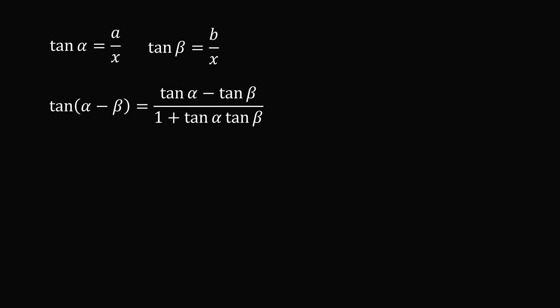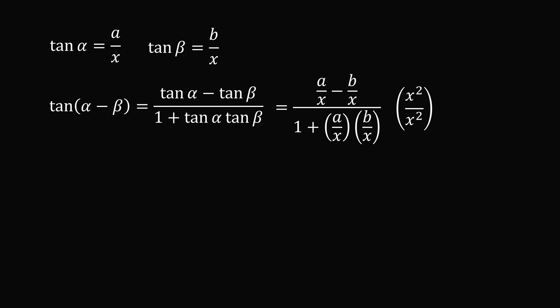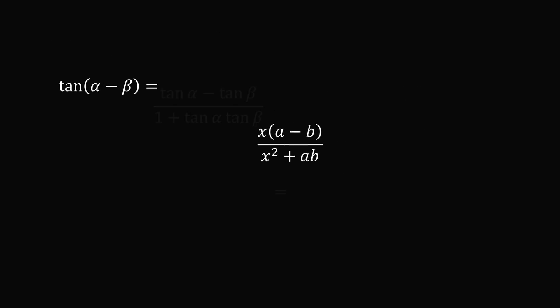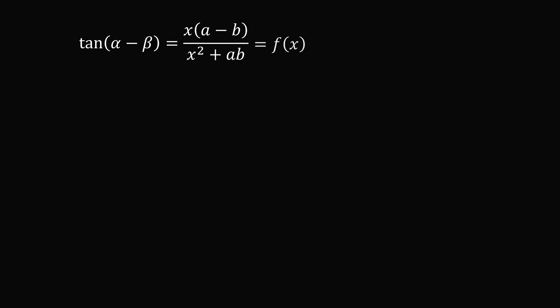We will substitute in for tangent alpha and tangent beta and simplify. A convenient trick is to multiply the numerator and denominator by x squared to get rid of the fractions. So the numerator becomes x multiplied by (a minus b), and the denominator becomes x squared plus ab. What we have done is set up the problem so that we have a function of x, where a and b are unknown constants. We now want to maximize this value, which is equivalent to maximizing f of x. A standard way to do this is to use calculus.